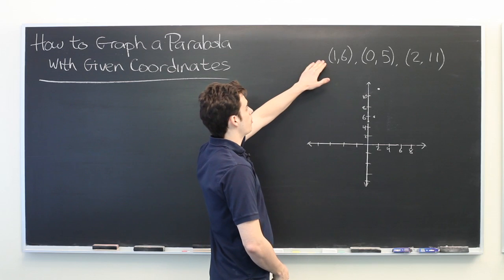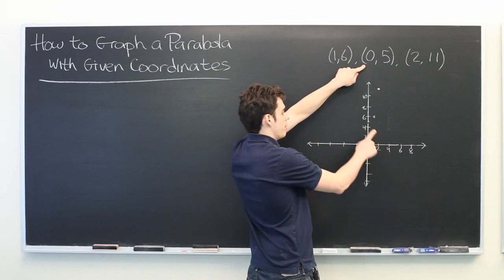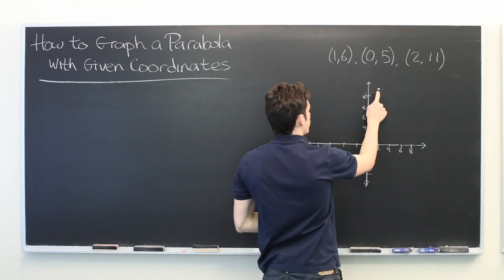So here we have three points. 1, 6 which is right here. 0, 5 which is right here. And 2, 11 which is up here.